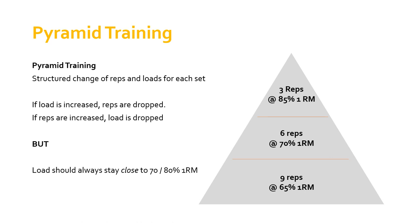In that corridor of 70 to 80 percent, that's where you need to be in order to be improving strength. If you drop lower in terms of the load, you'll be targeting muscular endurance or other adaptations. So try and make sure that your sets, reps, and load are organized so you're still working on strength — keep the load somewhere between 70 and 80 percent of your one rep max. If you want more on that, please check the strength training principles video — I'll put the link in at this point.